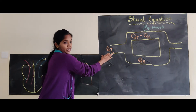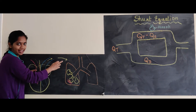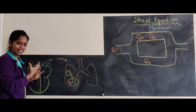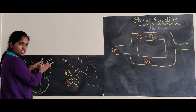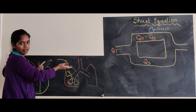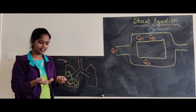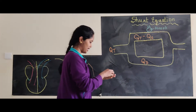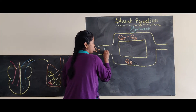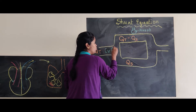What is Qt? It is the amount of blood coming from the pulmonary artery. The pulmonary artery is essentially a giant vein, so the oxygen content of the blood coming from the pulmonary artery must be equal to the oxygen content of venous blood, which we denote as venous oxygen content — CVO2.